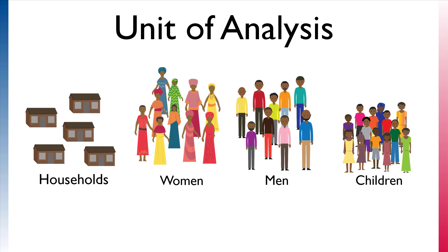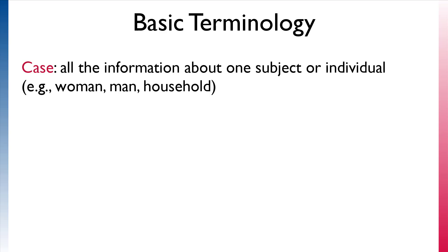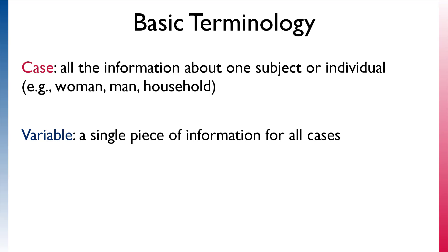To make sure everyone is on the same page, let's review some basic terminology. When we talk about a case, we are referring to all of the information about one subject or individual. When we talk about a variable, we are referring to a single piece of information that is available for each case, such as age, sex, or household possessions.